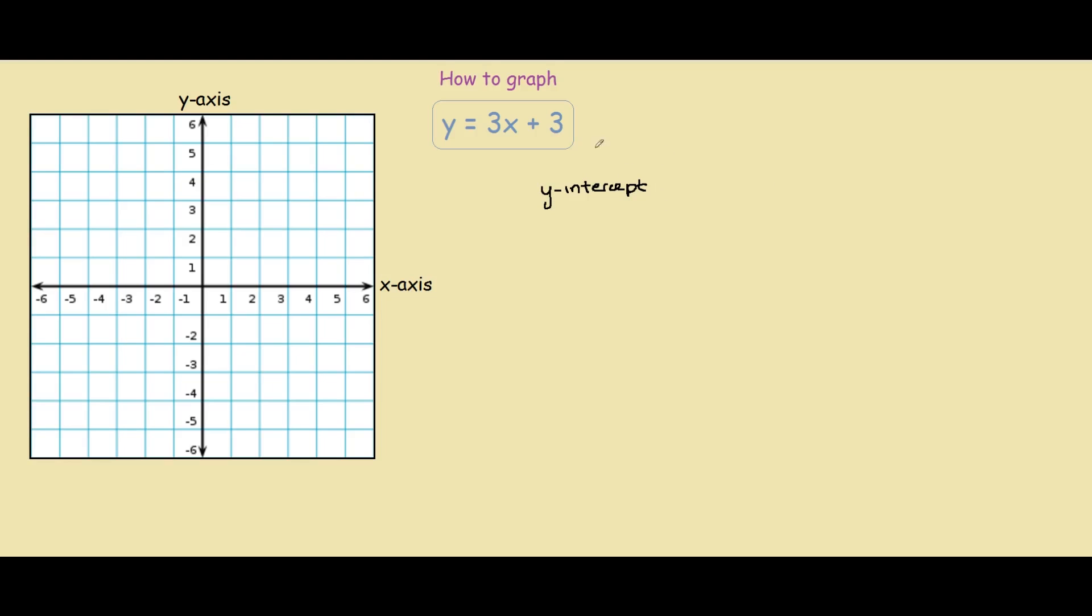So for the y-intercept, we know that it crosses the y-axis and on the y-axis, we know that x equals 0. So if we know x equals 0, we can substitute x equals 0 into our equation to find the y-intercept. So we have y equals 3. Remember, x is 0, so 0 plus 3. So 3 times 0 is 0, so we're just left with plus 3.